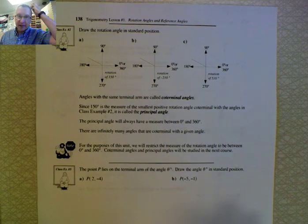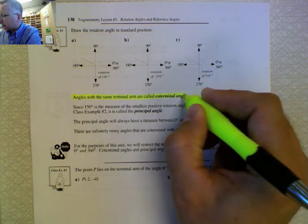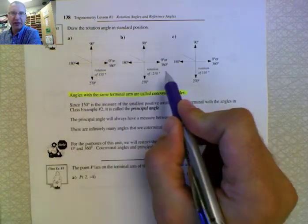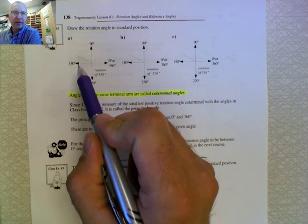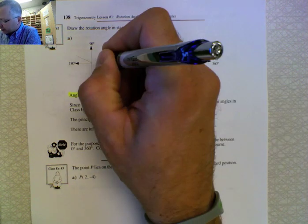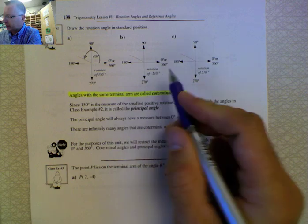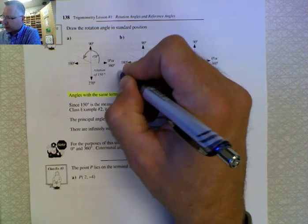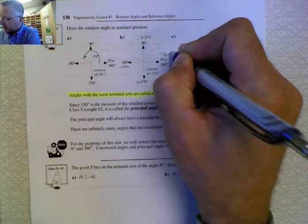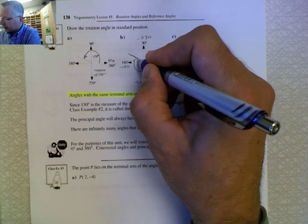Next we look at coterminal angles — angles that have the same terminal arm. They're different in measure but the terminal arm ends up at the same position. Looking at three diagrams, all have the terminal arm in quadrant two, but the measures are different: 150 degrees, negative 210 degrees, and 510 degrees. For negative 210, rotating clockwise: 0, -90, -180, and -210 lands us between -180 and -270, which is the same position as 150 degrees.